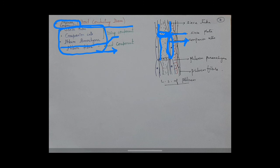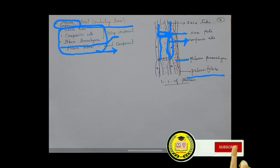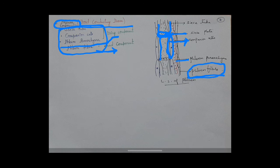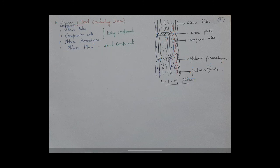Phloem parenchyma and phloem fiber are also present. Phloem fiber helps to support the plant. So this is about the phloem — phloem is a food-conducting tissue. This is about all the types of plant tissue.